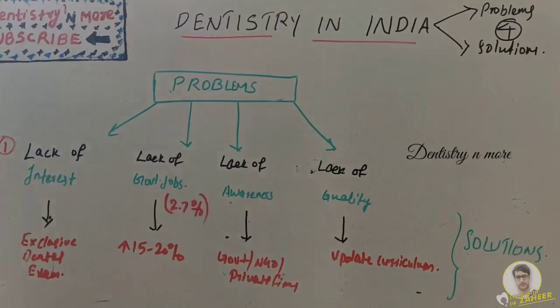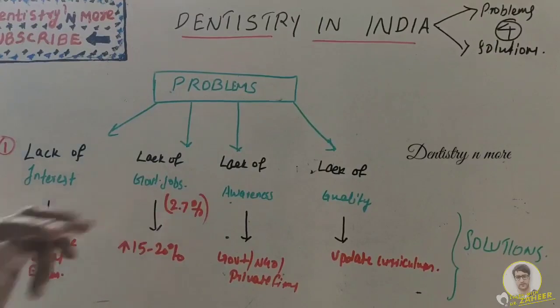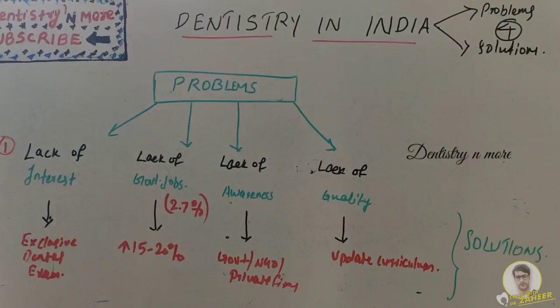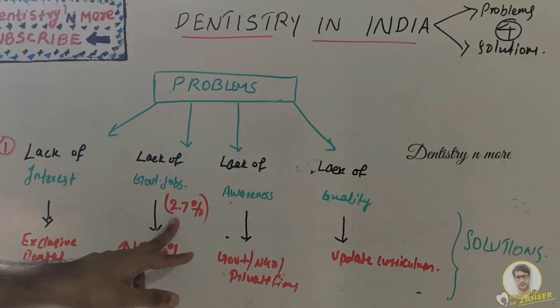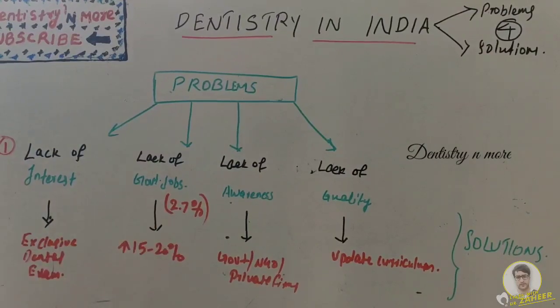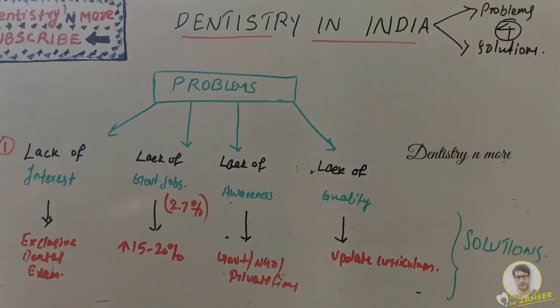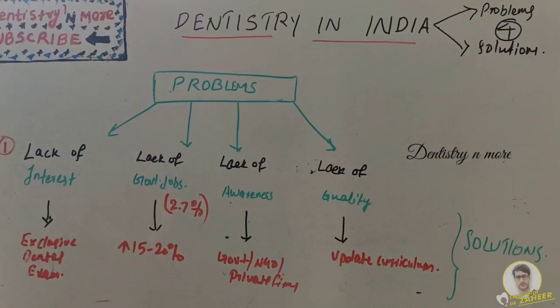The second one is lack of dental jobs. As per the latest survey, just 2.7 percent are in the government sector. Comparatively, the government sector has better pay. Imagine, it is not at all proportionate, just 2.7 percent. From the government point of view, it might be difficult to keep a dentist in a job because government has to build the infrastructure. The dental chair and all those accessories might cost four to five lakhs.